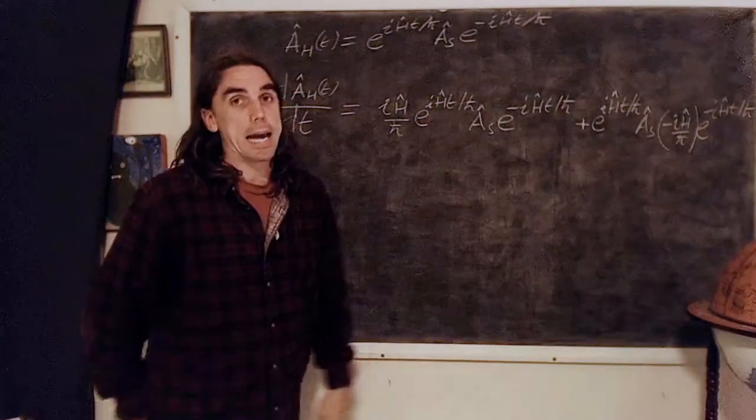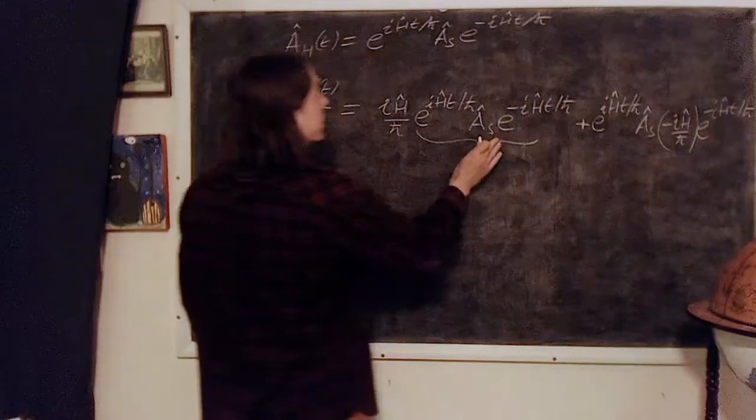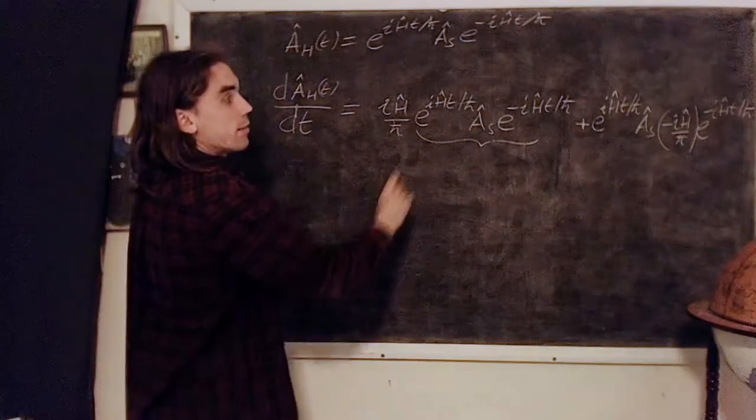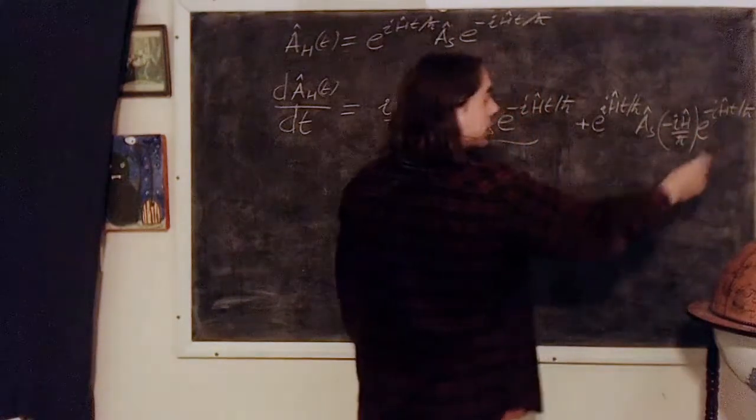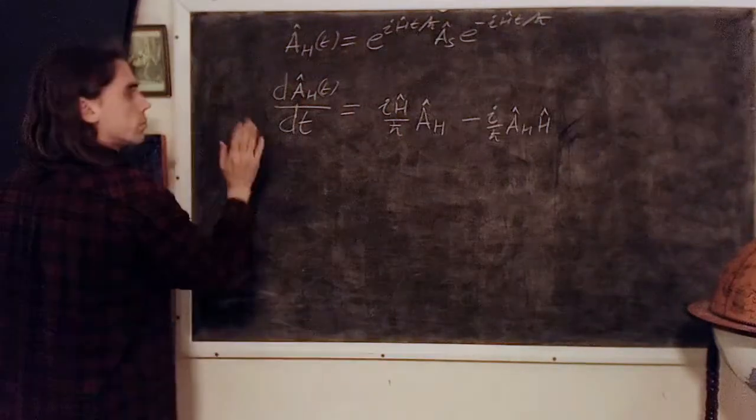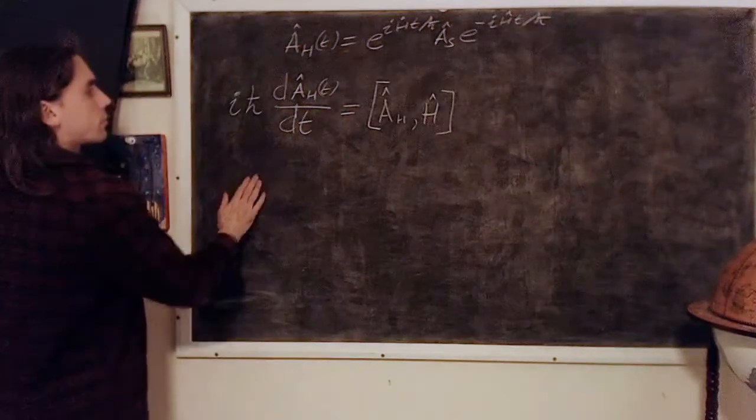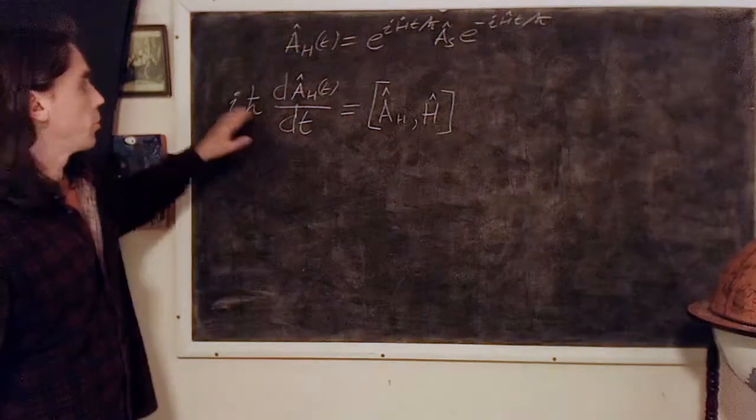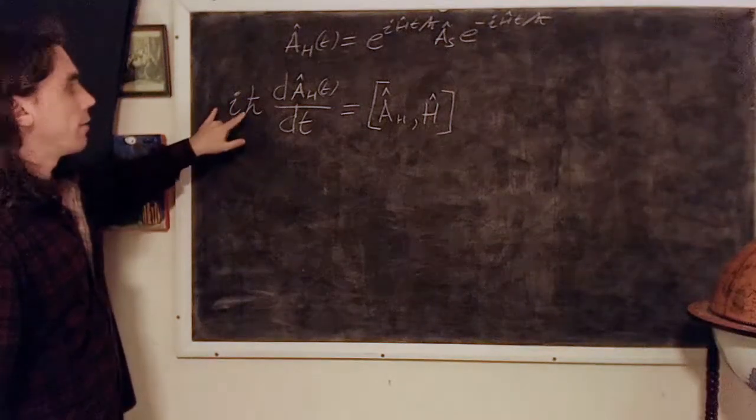If we look at what we have here, this thing here is just A_H(t) by definition. We bring the H over to this side and we get A_H again, giving us this which we can rewrite as follows, where I've multiplied through by the ℏ and the i.